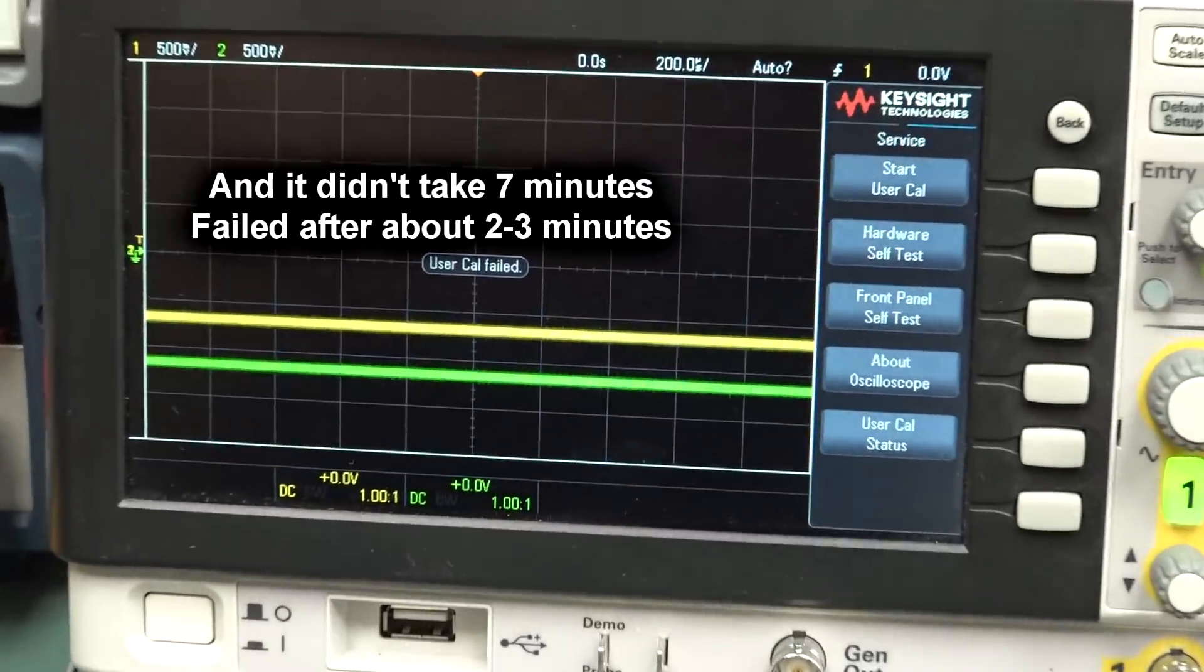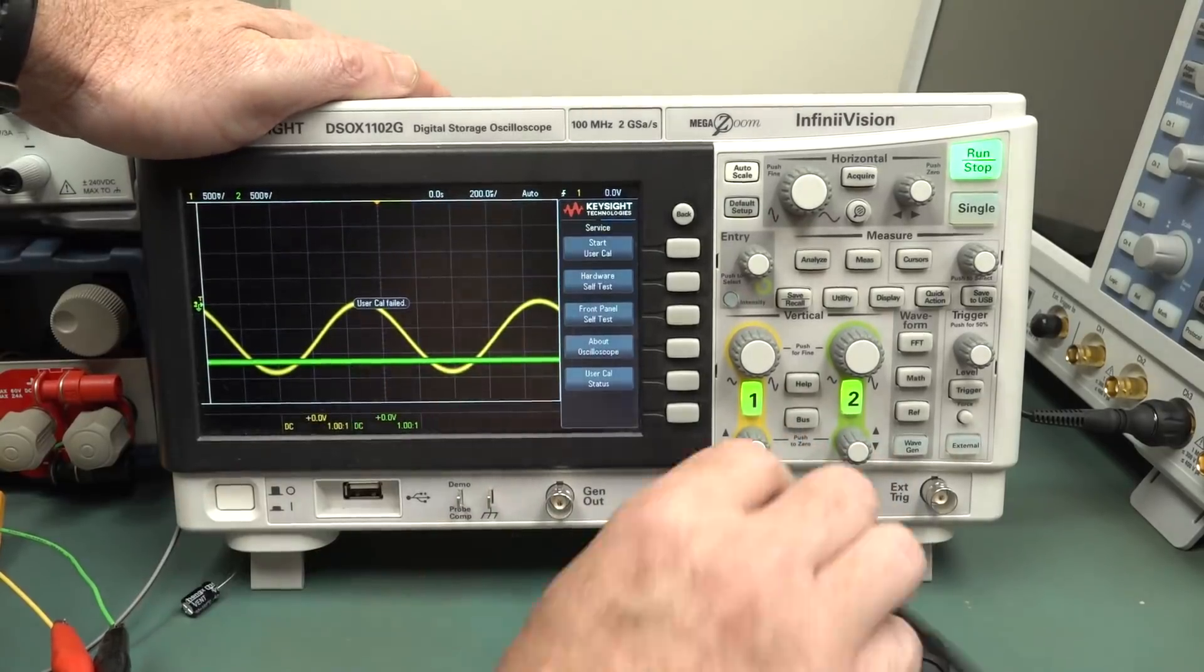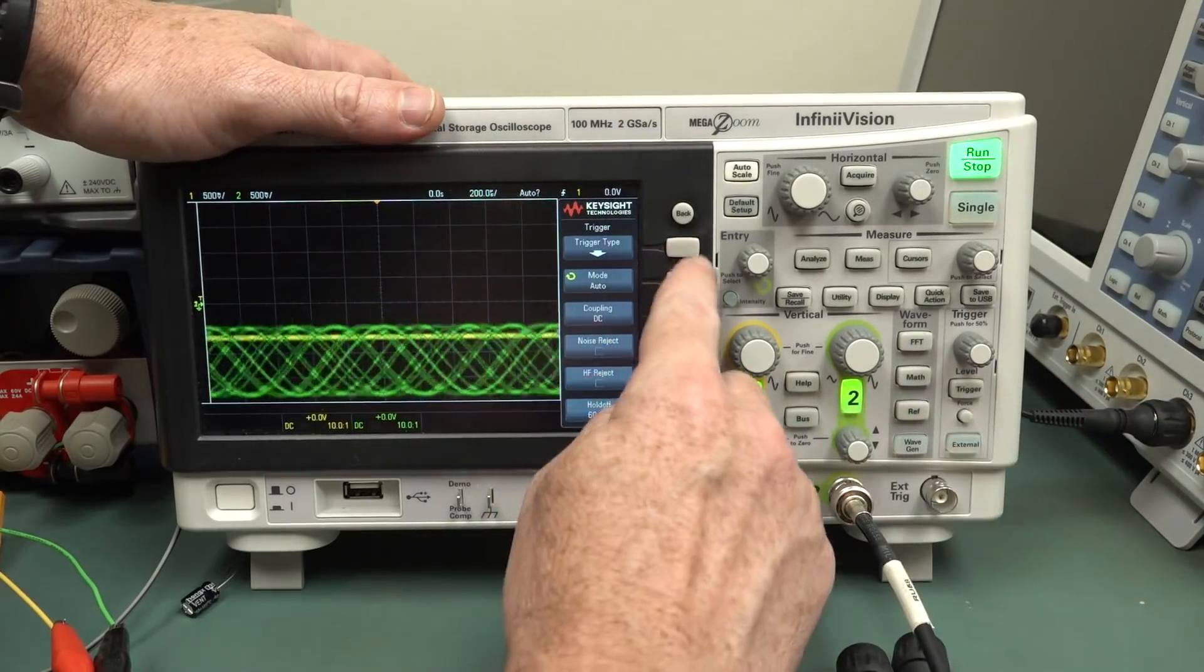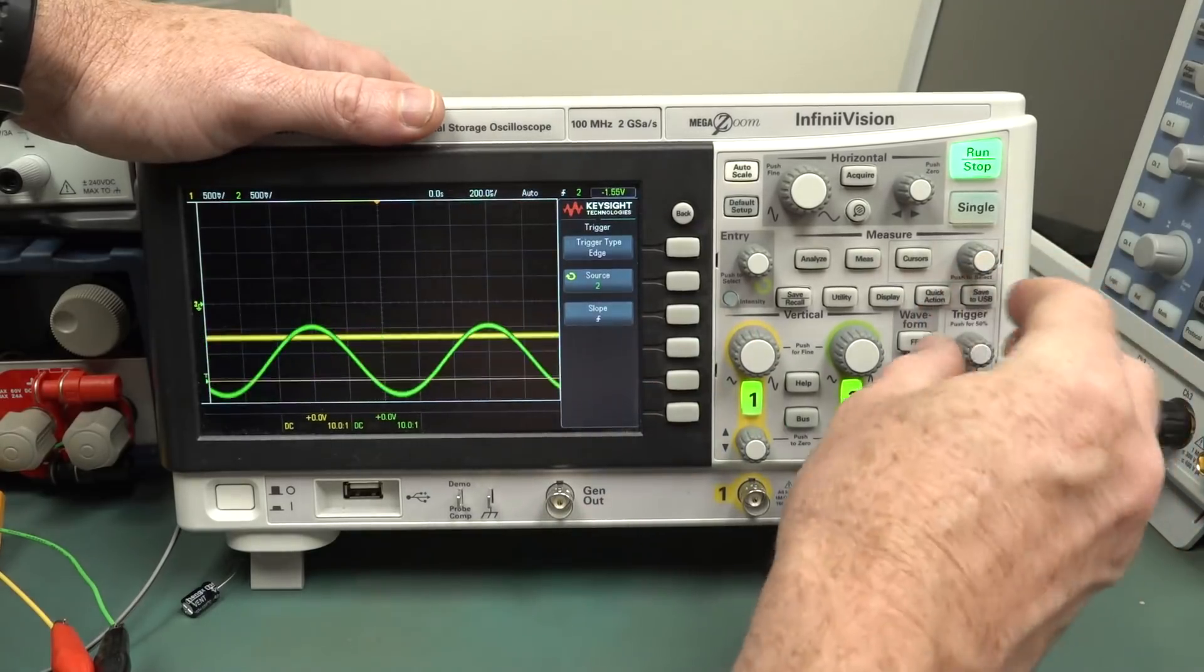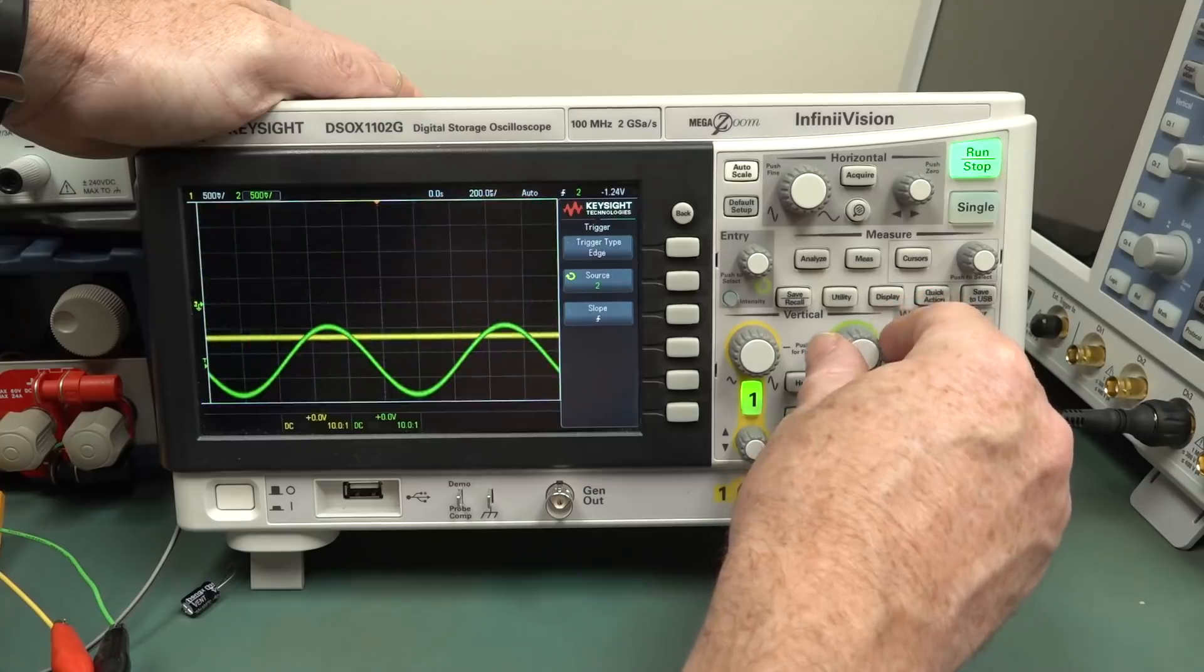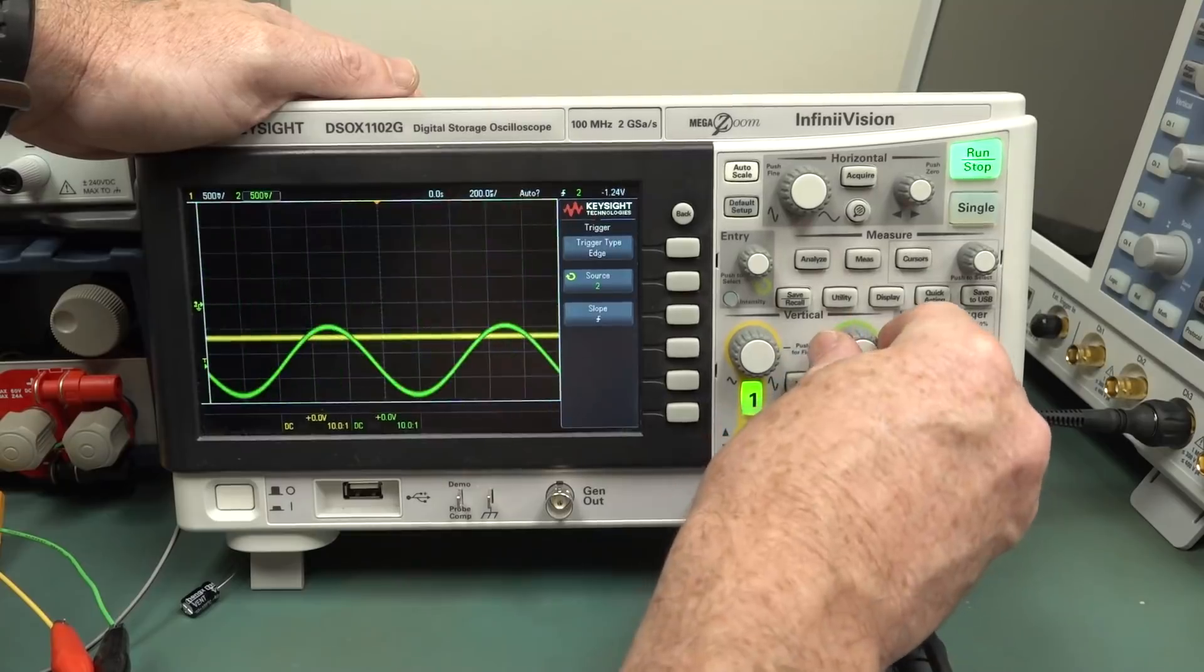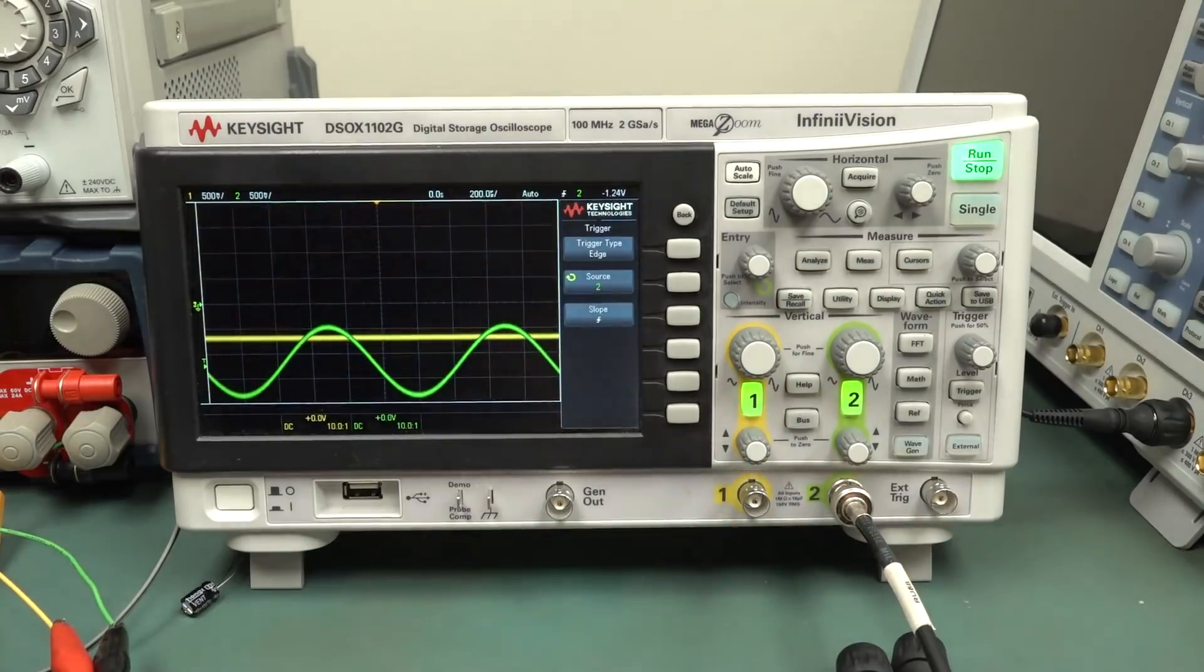And surprise, surprise. It failed again. And the interesting thing, of course, is that it happens on both channels. There it is. Sure, we're triggering off channel two there. Source two. There we go. But they're both got... Both channels have that DC offset on the 500 millivolt and the 200 millivolt ranges. Like, that's just nuts. I... Why? Both channels. So it's not like a physical hardware fail on a channel. They're two independent channels. So I just... I'm not getting it.